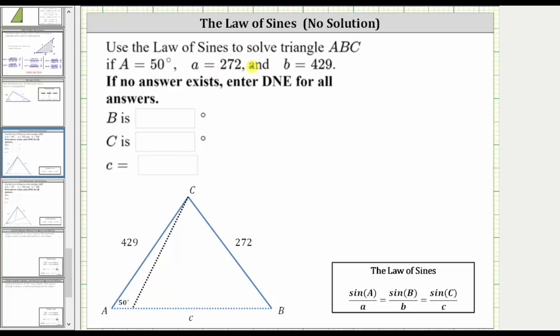We are asked to use the law of sines to solve triangle ABC. If angle A equals 50 degrees, side A has a length of 272 units, and side B has a length of 429 units.